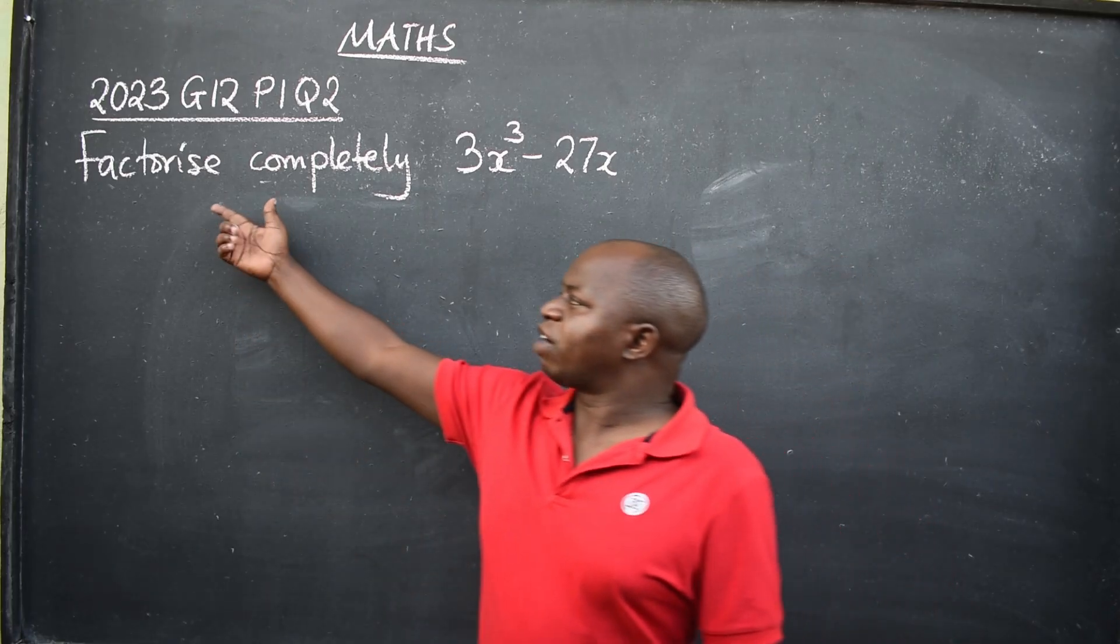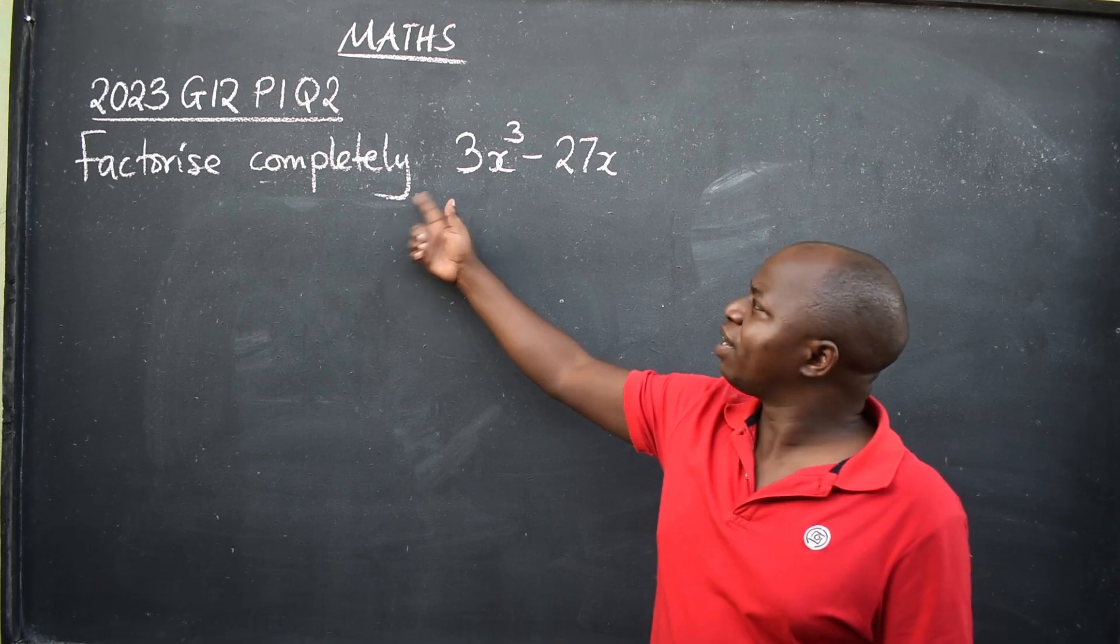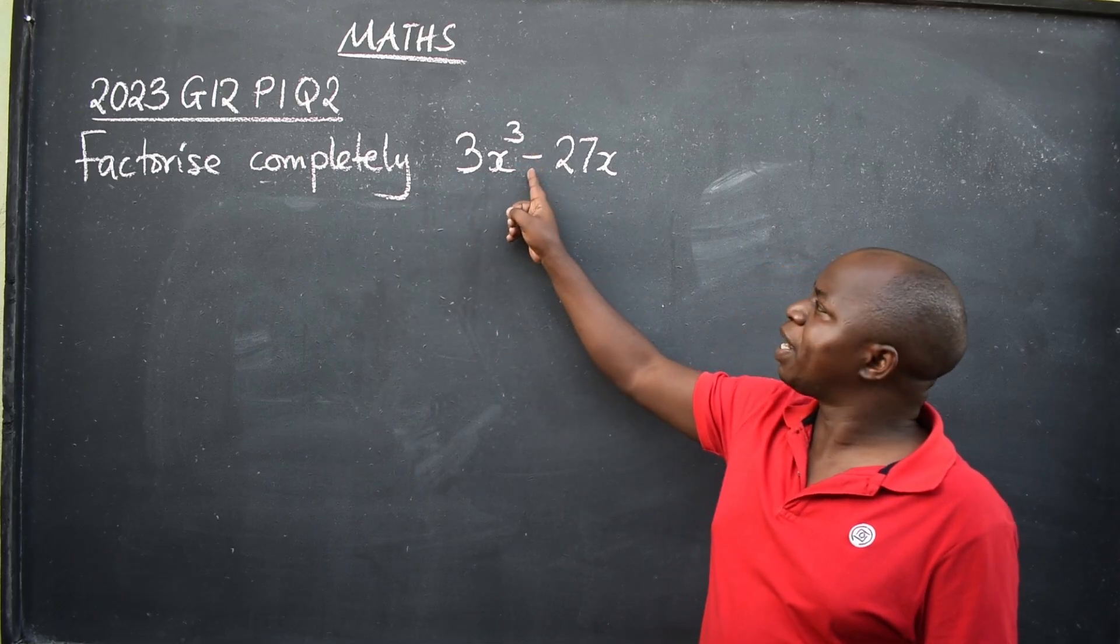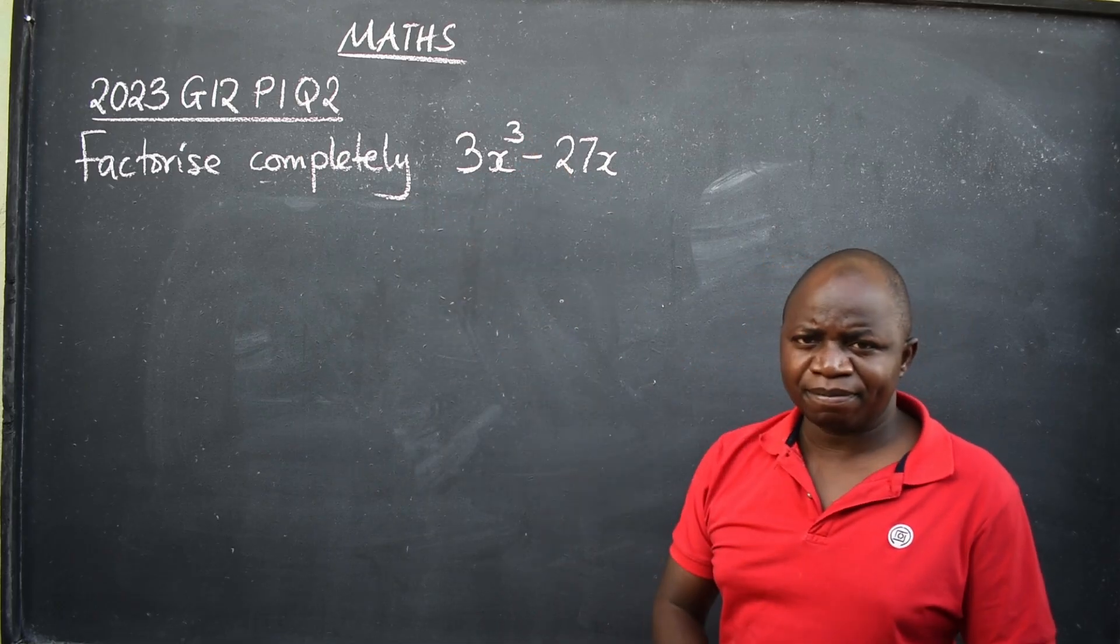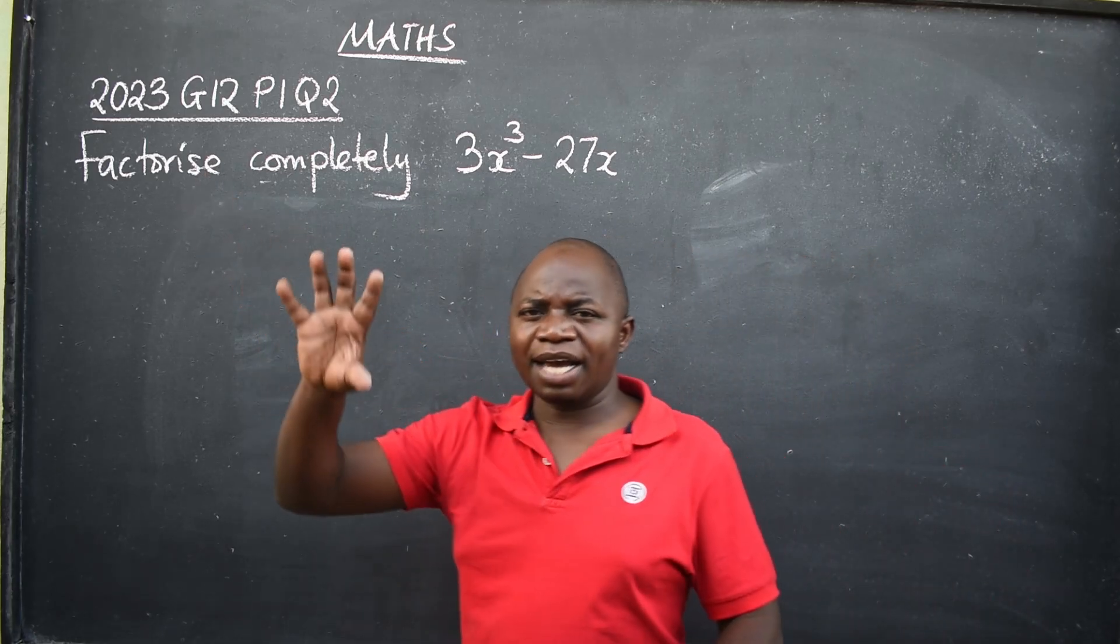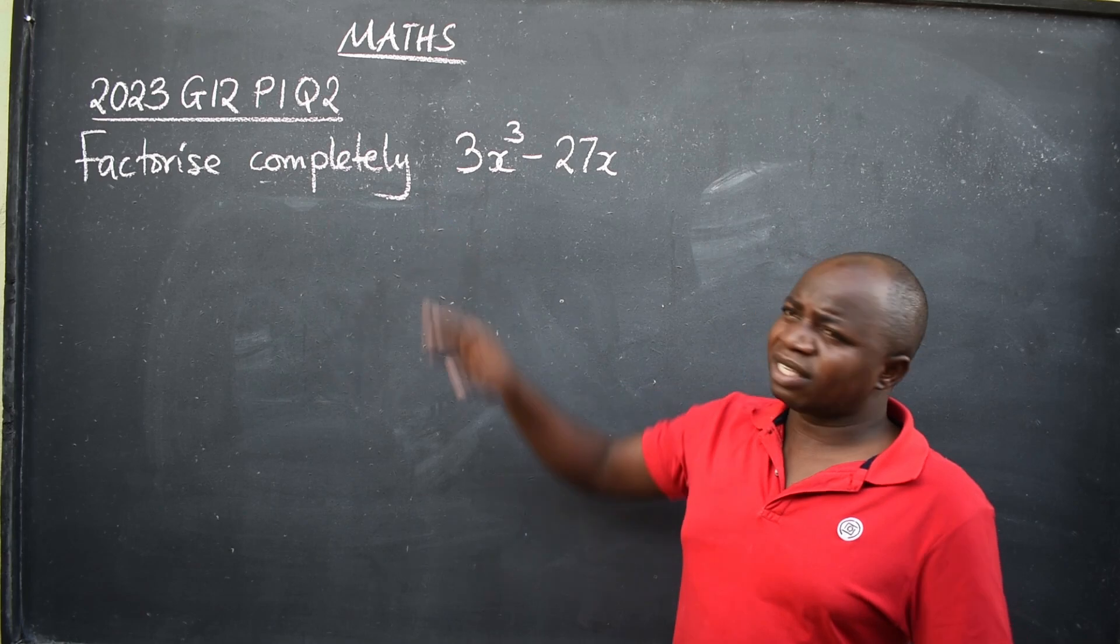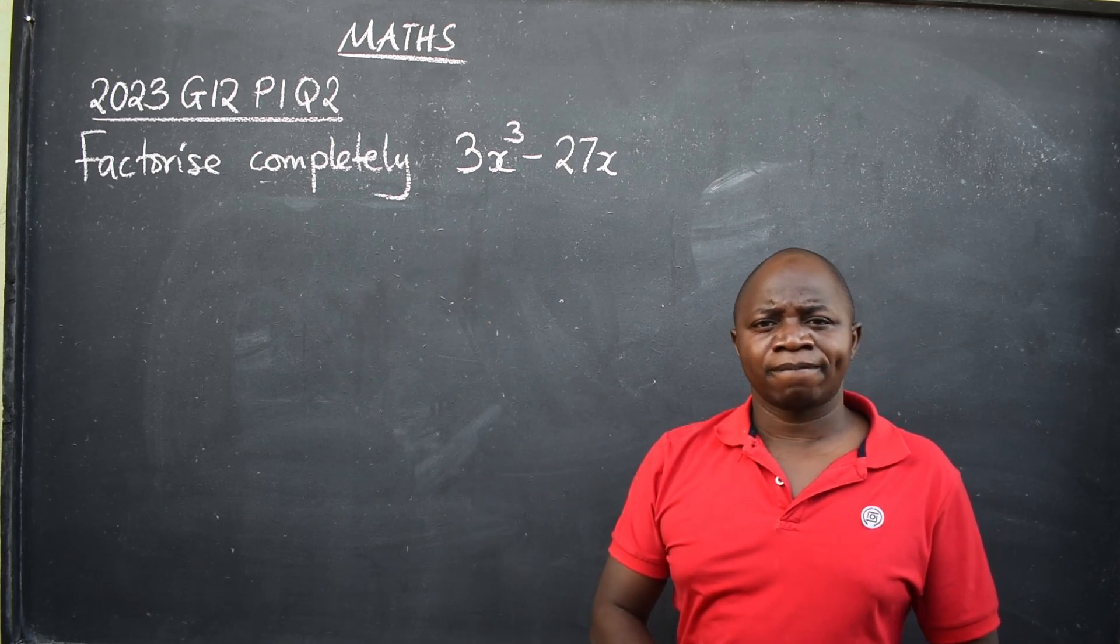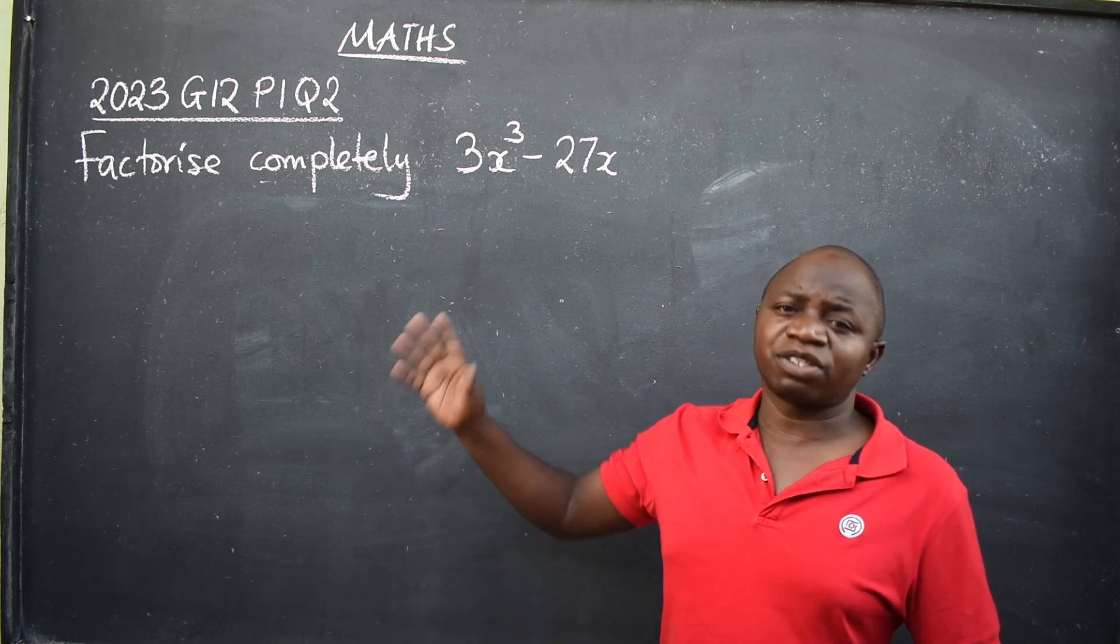Let's look at this question coming from 2023 grade 12 internal examination, question number two, paper one. The question: factorize completely 3x to the power 3 minus 27x.